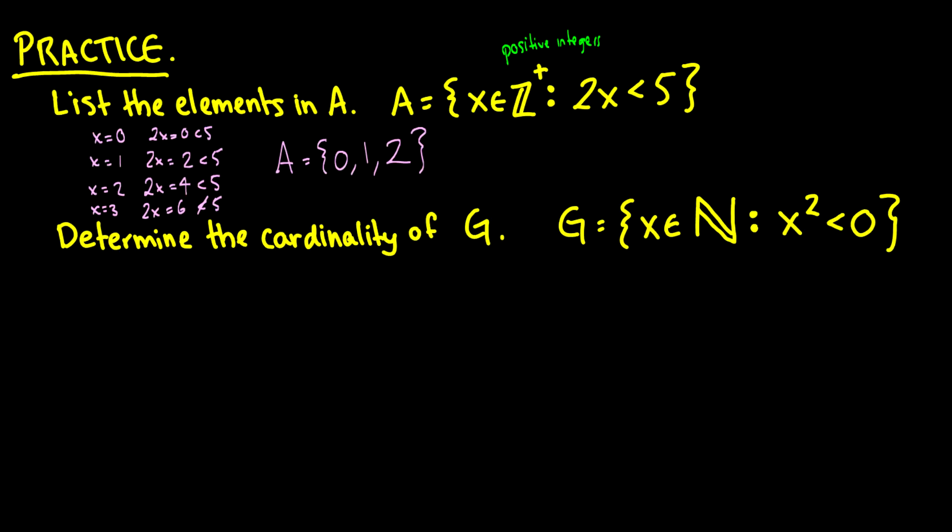So this set right here, that was made in set builder notation, can be listed as a 3 element list right there.